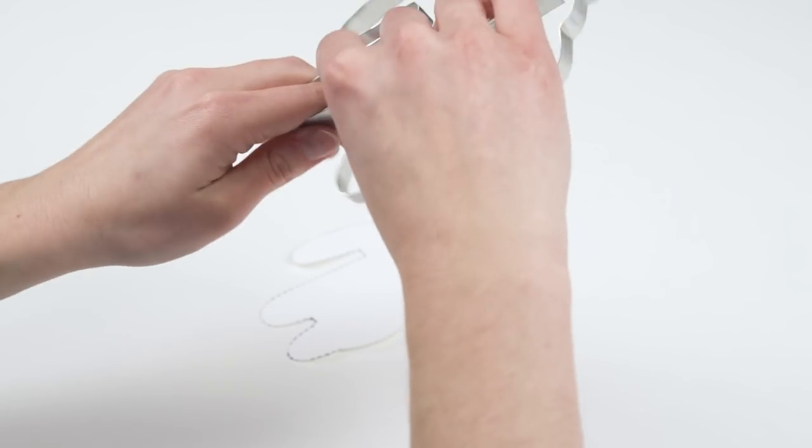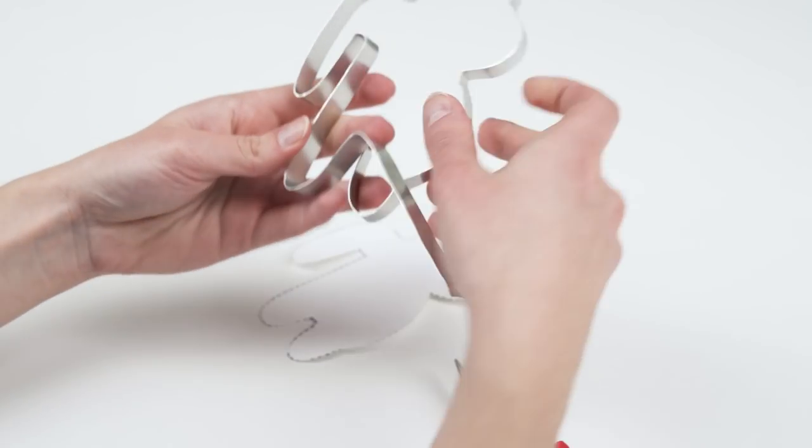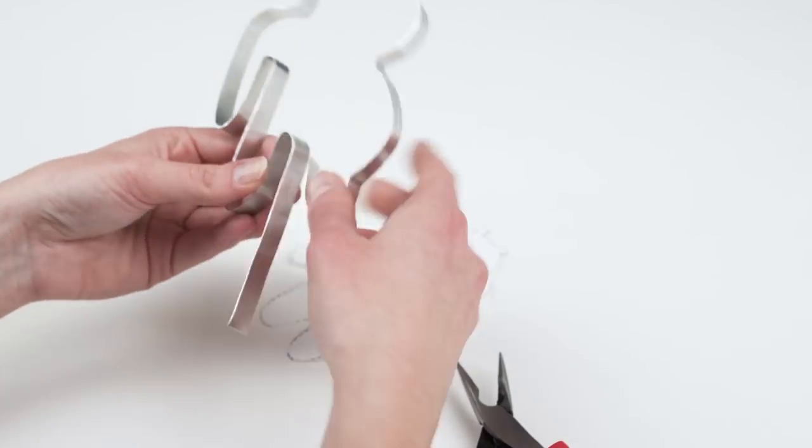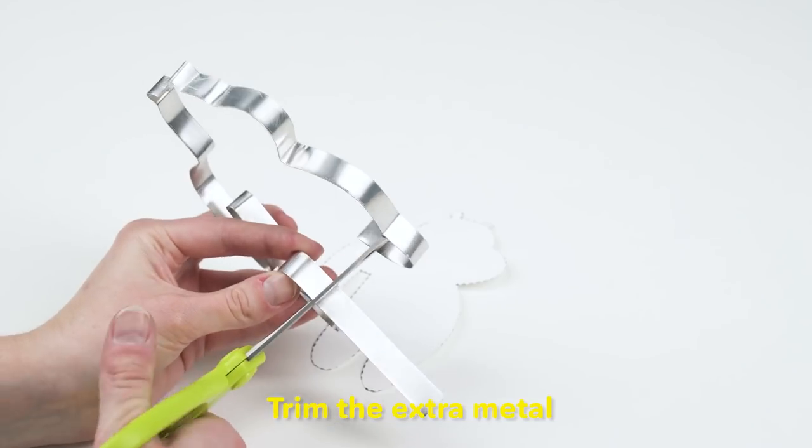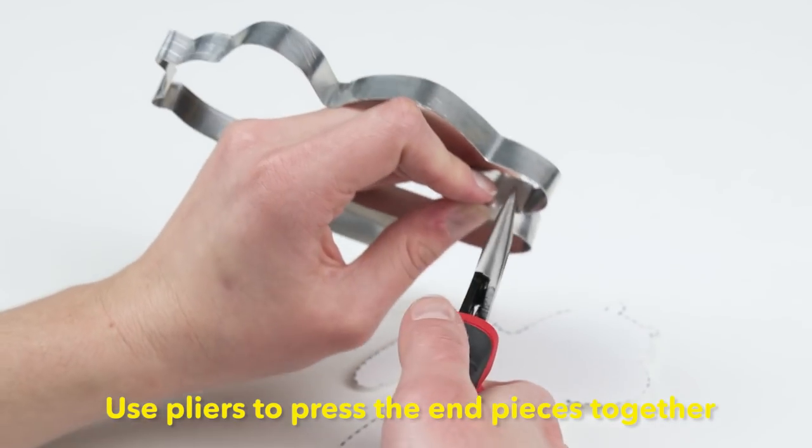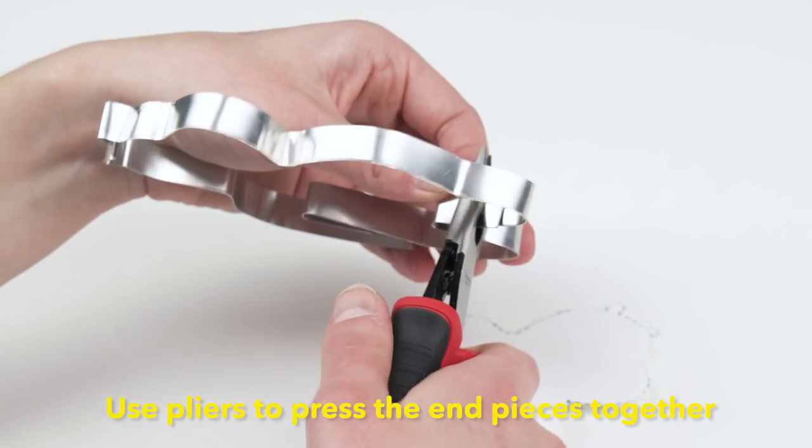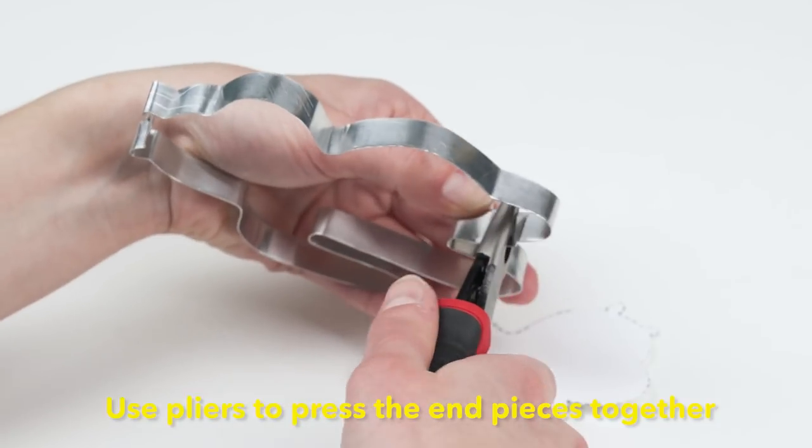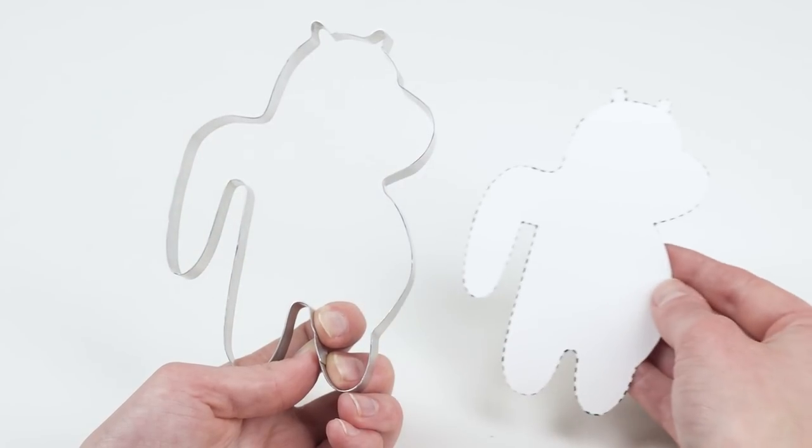Now for the legs. There's a little extra piece of metal. I'm going to cut it off. Press the end pieces together with pliers to make them fit together even more. And here we have the shape of a bear.